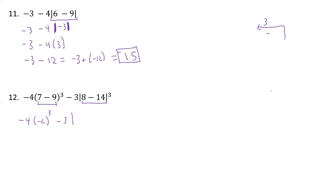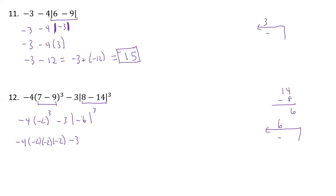Here we have 8 minus 14. If you need to, you can take 14 minus 8, and that gives us 6. The larger one was negative so it's negative 6, and that's still cubed. Going up to that sign again, we go left 6 blocks but that distance is 6. As we go left to right, we expand everything. We have a minus 4 times three negative 2s, then negative 3, then the absolute value which we said was positive 6, cubed. Negative times a negative is positive, and then negative times a negative again is positive.